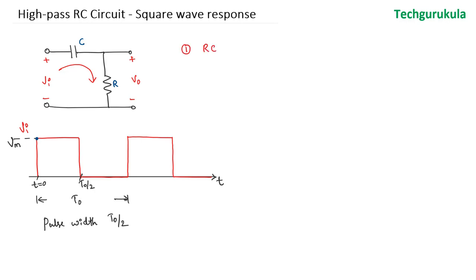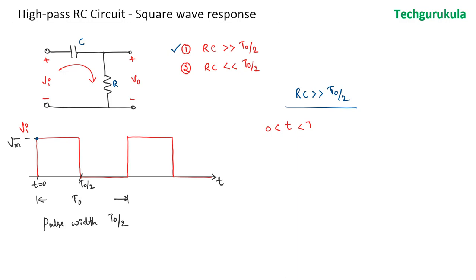Case one: when RC is very, very high compared to the pulse width T0 by 2, and case two: where RC is very, very small compared to the pulse width T0 by 2. Let us investigate the first case where RC is very, very greater than T0 by 2. When T is between 0 and T0 by 2, the voltage across the capacitor will be equal to Vm times 1 minus e to the power minus T over RC.